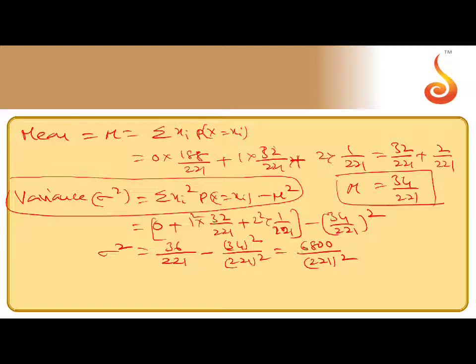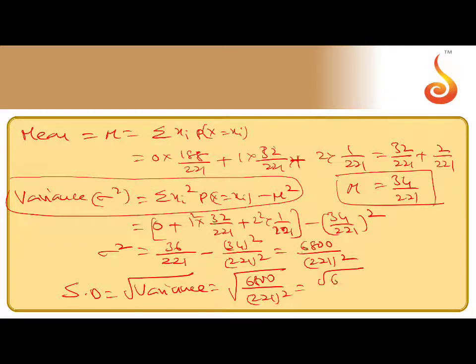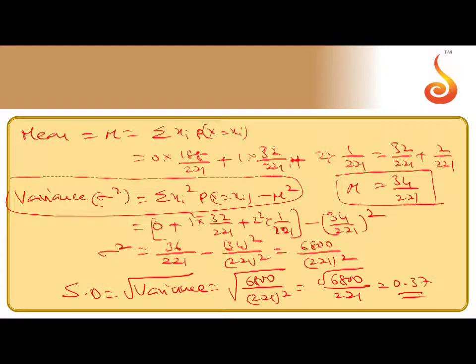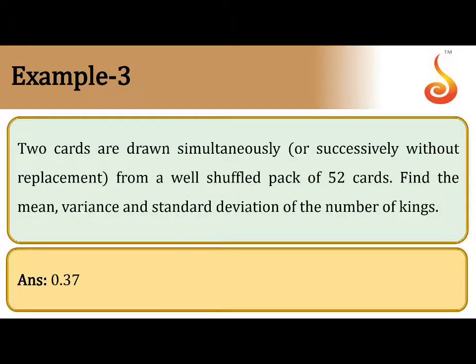Now we want SD. SD equal to root over variance, that is root over 6800 by 221 whole square, that is root 6800 by 221. The final answer will become 0.37. You can use calculator and solve it. 0.37 is the answer for standard deviation. Thank you.